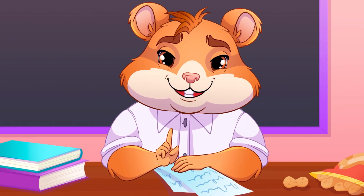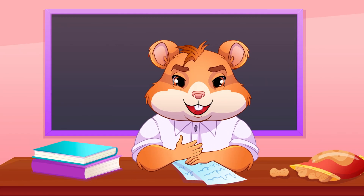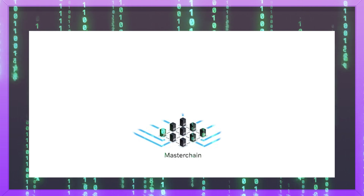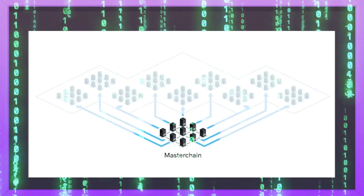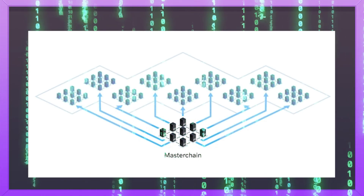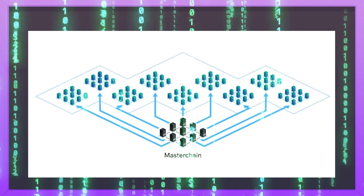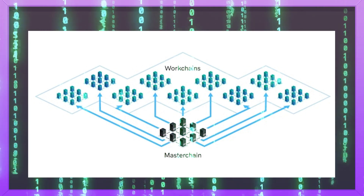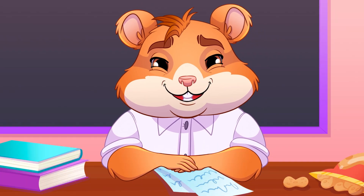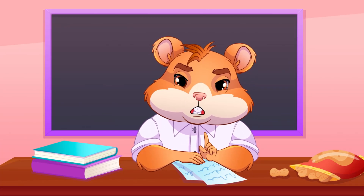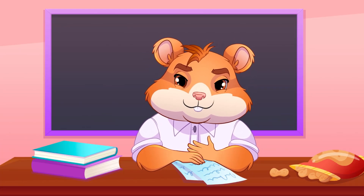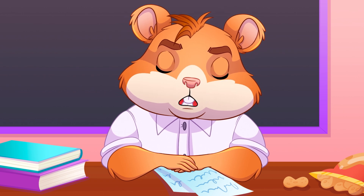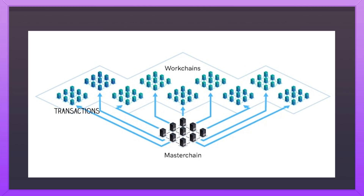And now let's dive into TON's main parts. The masterchain is the central blockchain that governs and coordinates the operations of the entire TON network. It ensures the synchronization and proper functioning of all other blockchains within the network. Workchains are specialized blockchains that operate under the masterchain. Each workchain is designed to handle specific tasks — for instance, one workchain might be dedicated to processing transactions, another to data storage, and yet another to managing smart contracts. Genius!